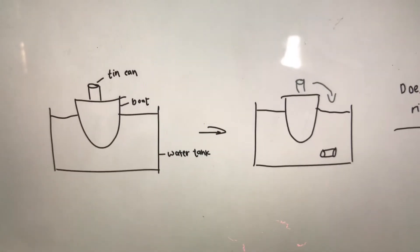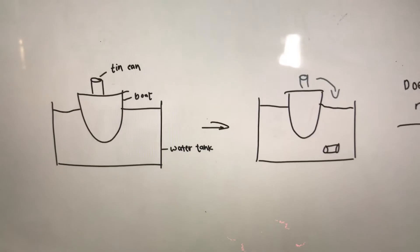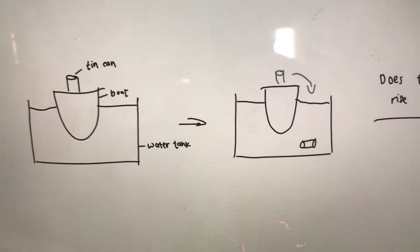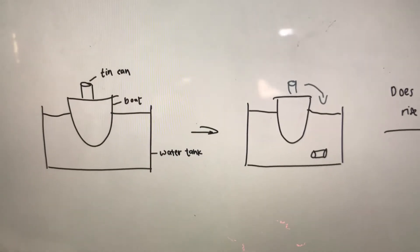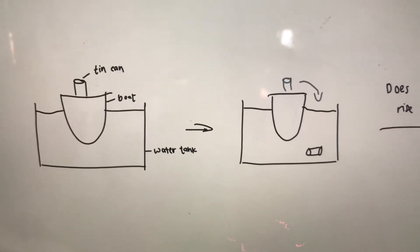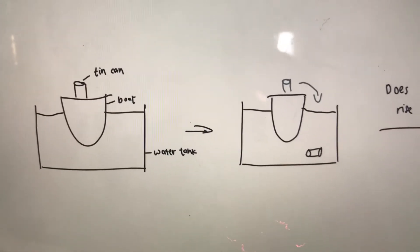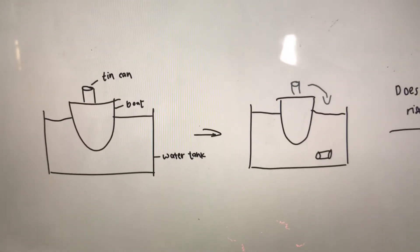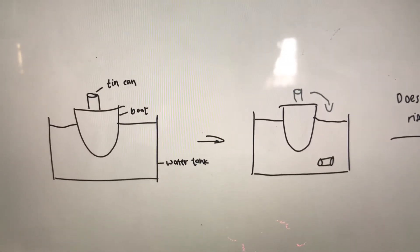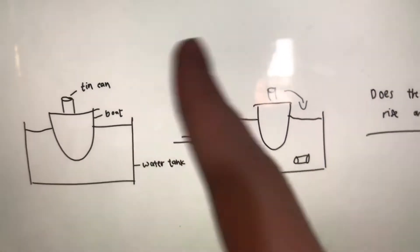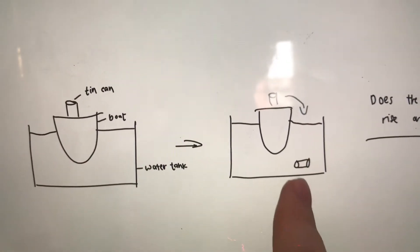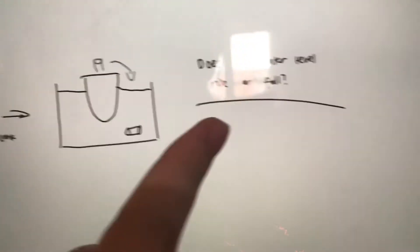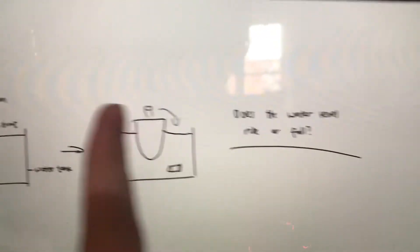The person who was interviewing me verbally explained the problem to me. Basically, the problem was: there's a water tank, and there's a boat floating on top of the water, and there is a tin can on the boat. What happens is the tin can is pushed into the water — so it goes from being on the boat to being in the water. And the question was: does the water level rise or fall?